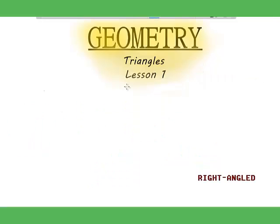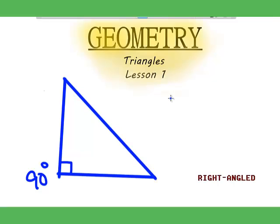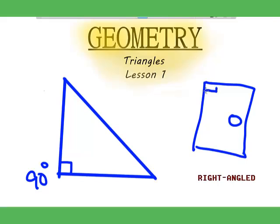So the next type of triangle is the right angle triangle. This triangle has a ninety degrees angle. So a right angle is ninety degrees. If you look around you, if you have a book, the corner of your book — the angle of one of the corners of the book is ninety degrees. And if you look at the door, the angle of the corner of it is also ninety degrees. So they are all right angles. And you see that square symbol in each corner — that's the bit to represent a right angle, a ninety degrees angle.